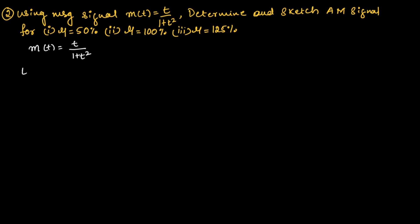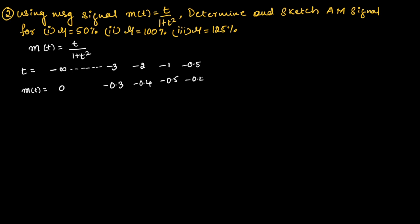For different values of t, let us find the value of m(t). If t = −∞, m(t) = 0. For t = −3, m(t) = −0.3. For t = −2, m(t) = −0.4. For t = −1, m(t) = −0.5. For t = −0.5, m(t) = −0.4. For t = 0, m(t) = 0.